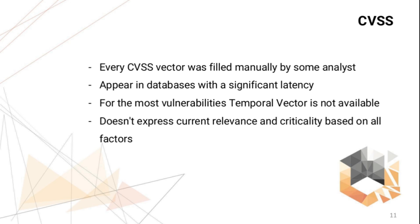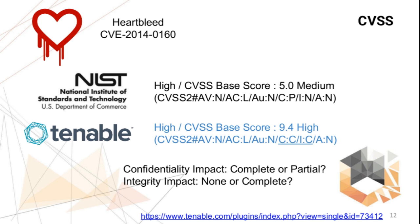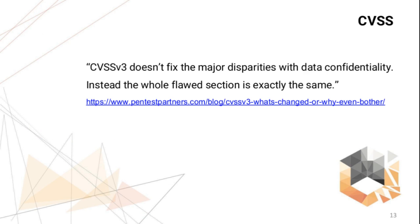A good example is the well-known Heartbleed. Heartbleed was rated as a medium-level vulnerability by NVD. But on the other hand, Tenable Network Security, the well-known vulnerability management vendor, believes that this vulnerability should have a different CVSS vector. So this is a controversial issue — confidentiality impact is complete or partial, integrity impact is none or complete, and the final result depends on this. It was the second version of the CVSS standard; now the actual version is third. But in version three, problems with confidentiality were not solved either.